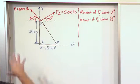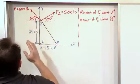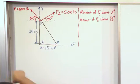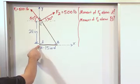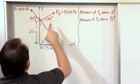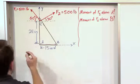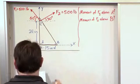You could do this in a scalar fashion—break this up into X and Y components and figure out what it does in terms of rotating about A. And you could split F2 into X and Y components and do the same thing for B, but we're not going to do that. We're going to do the vector calculations.